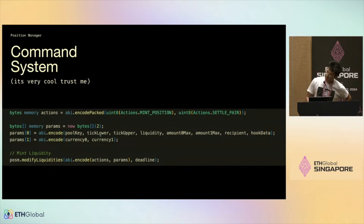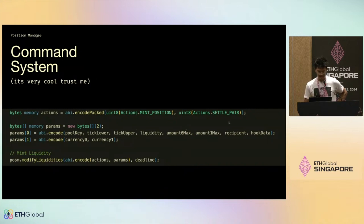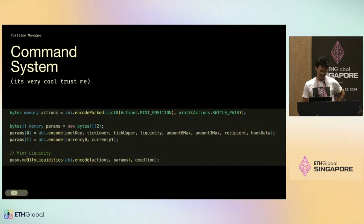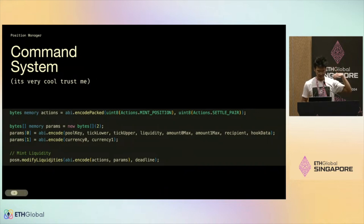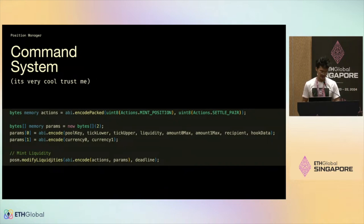Can you guys see my mouse on the screen? You have the pool key, the tick range, liquidity, some slippage, as well as the recipient of the NFT position. And then in the second line you're also encoding what currencies are being paid — currency zero and currency one. In terms of actually making the call, this is really minting the position. It's the same function signature for increasing liquidity, collecting fees, and burning positions. That's kind of where some of the friction comes into play when using command-style systems.